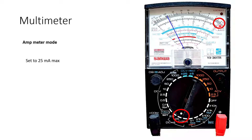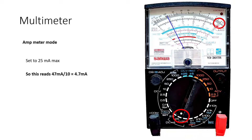From here, you can see that this thing is not quite 50 — there's a little bit more there, so this reads like 47. So I read 47 out of 250. To convert that into the 25-milliamp scale, you divide by 10: 47 divided by 10 is 4.7 milliamps. So from there, you can read this as a current of 4.7 milliamps.